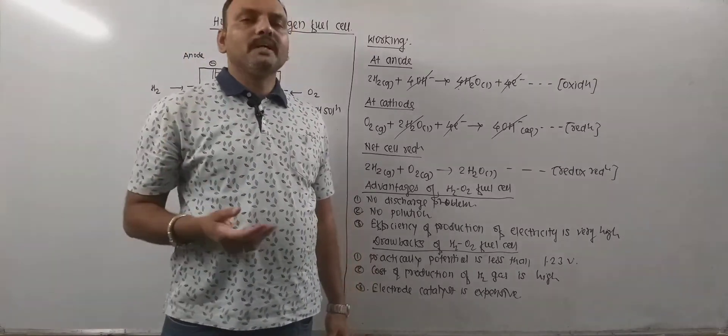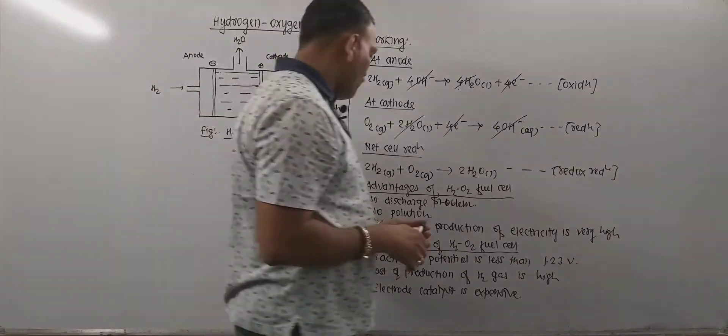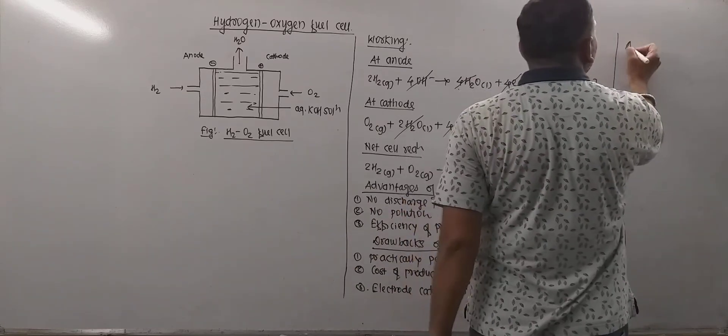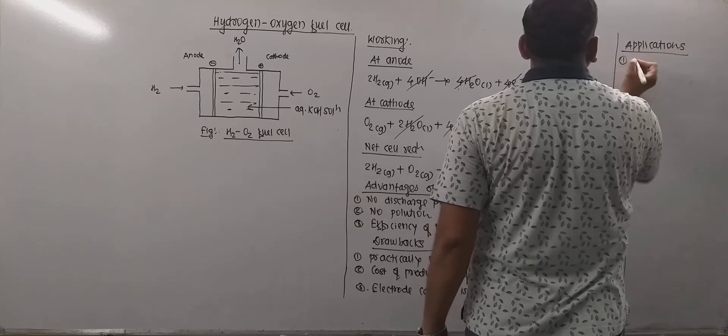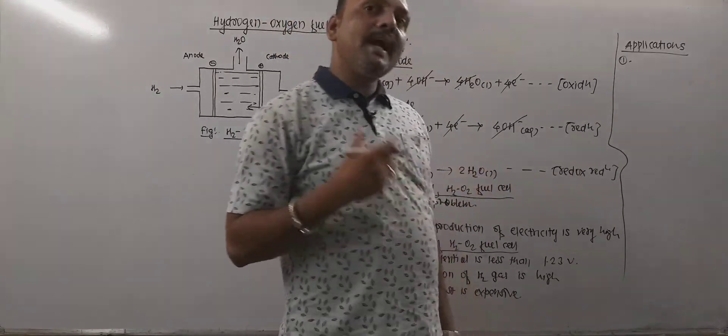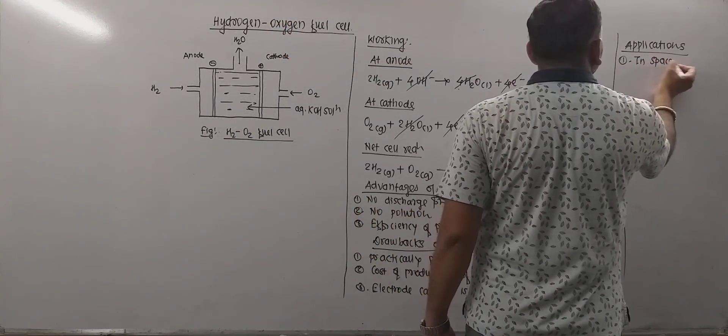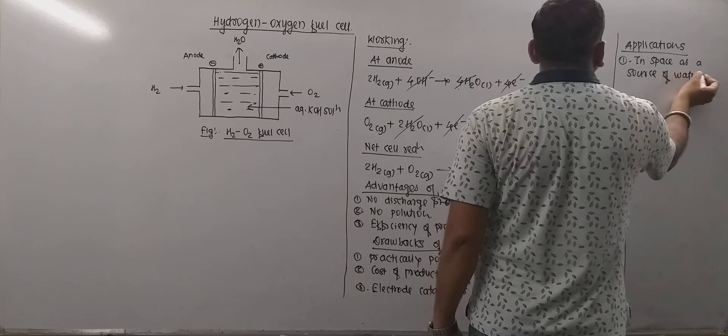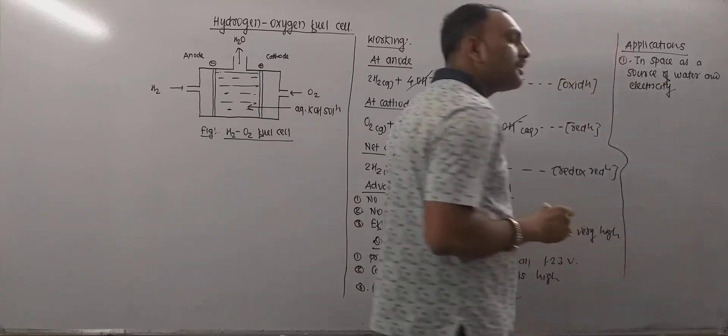But in future, H2O2 fuel cell may be used in the large scale. Now what are the applications of it? Fuel cells have number of potential applications. Now very first application is it is used as a source of water and electricity as well in space. So in space as a source of water and electricity. This is very important to note.